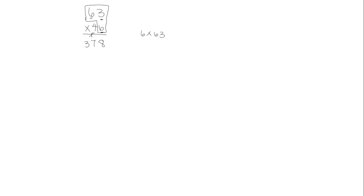For our second partial product, we're now going to multiply the 4 tens times 63, so we're doing 40 times 63. We know we're not going to have any 1s because we're multiplying by 4 tens, so the 1s digit is always going to be 0 in the second partial product. So 4 tens times 3 gives us 12 tens, and then 4 tens times 6 tens would be 24 tens, plus 1 more would be 25. When we add them together, we get a total product of 2,898.